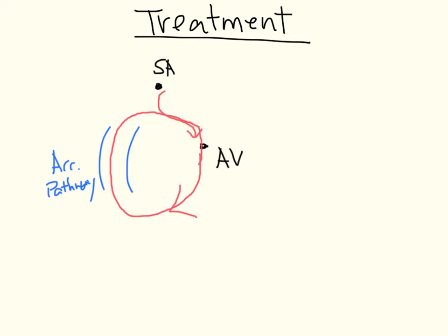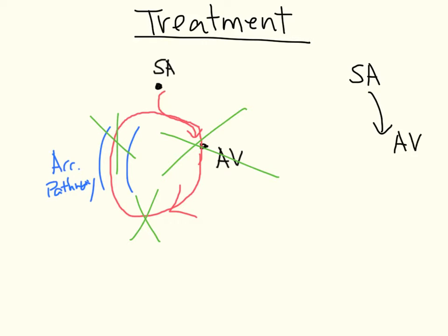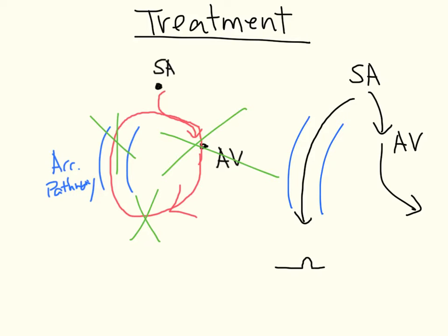In terms of treatment for orthodromic conduction, we block the circuit going around the AV node through the accessory pathway. We do this by vagal maneuver or blocking the AV node, which resets the circuit. Impulses should then travel from the SA node directly down to the AV node without re-entering the circuit. Since the accessory pathway still exists, impulses will still go through it, causing the delta wave we saw earlier.